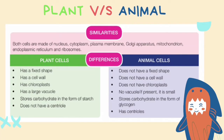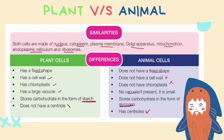Now that we've learned about all the organelles in plant and animal cells, let's recap before we end. Similarities between plant and animal cells include: both have a nucleus, cytoplasm, plasma membrane, Golgi apparatus, mitochondria, endoplasmic reticulum and ribosomes. Key differences: plant cells have a fixed shape due to the cell wall, whereas animal cells do not. Plant cells have cell walls, chloroplasts and large vacuoles, while animal cells have none of these — or only small vacuoles if present. Plant cells store carbohydrate as starch, while animal cells store it as glycogen. Animal cells have centrioles, while plant cells do not.